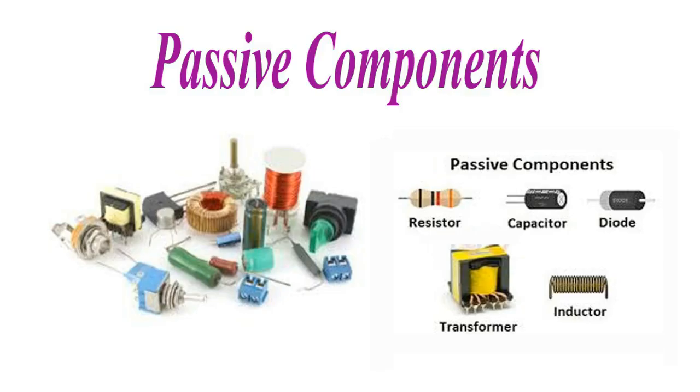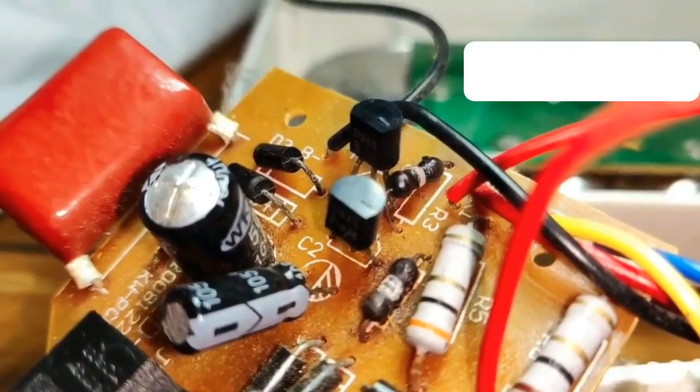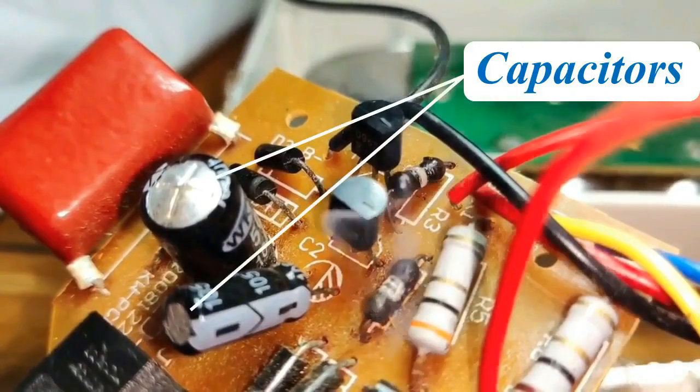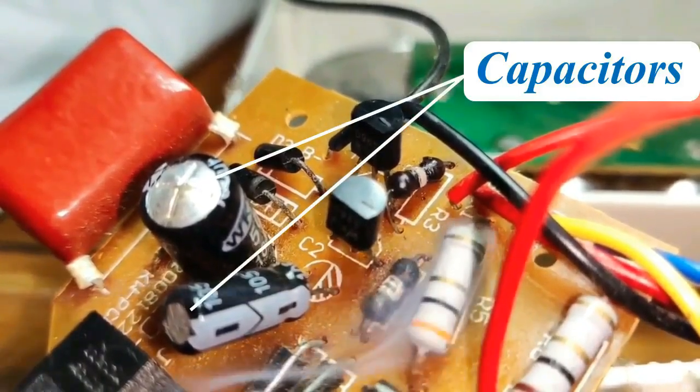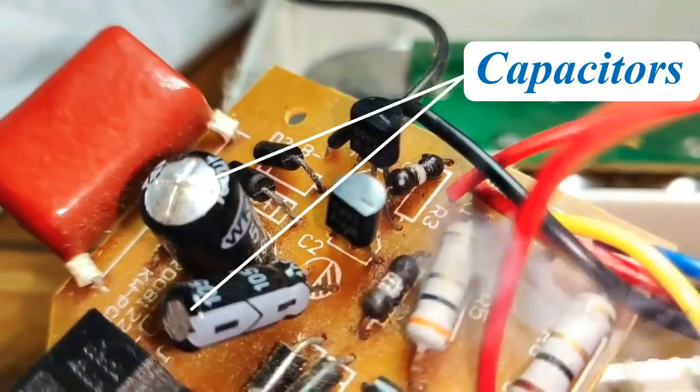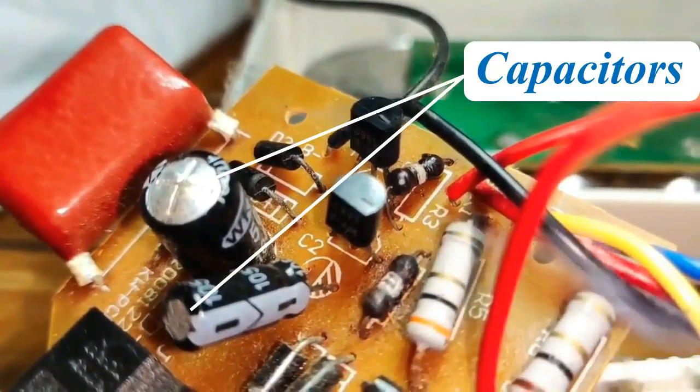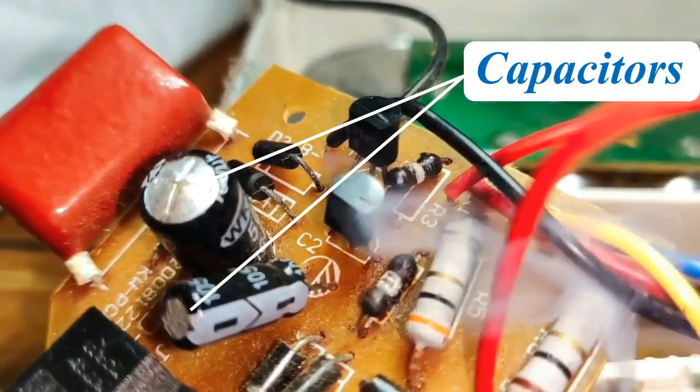Capacitors, together with resistors and inductors, belong to the group of passive components in electronic equipment. Small capacitors are used in electronic devices to couple signals between stages of amplifiers, as components of electric filters and tuned circuits, or as part of power supply systems to smooth rectified currents.